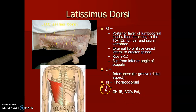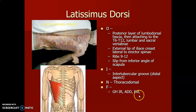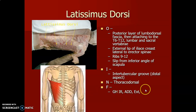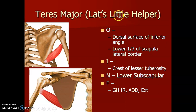Teres major is the helper of latissimus dorsi. It originates from the dorsal surface of the inferior angle of the scapula and the lower third of the lateral border of the scapula. It inserts on the crest of the lesser tuberosity — the medial lip of the bicipital groove — while pec major is on the lateral lip. Teres major is innervated by the lower subscapular nerve and causes internal rotation, adduction, and extension of the glenohumeral joint.